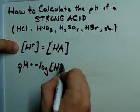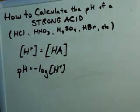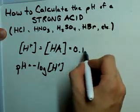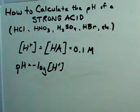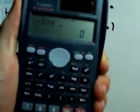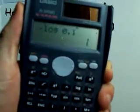Now, if you don't know what a logarithm is, there is a button on your calculator for it. For example, if my concentration was 0.1 moles per liter, all I would do to calculate the pH is type into my calculator negative log 0.1 and it will give me the pH. The pH is 1.